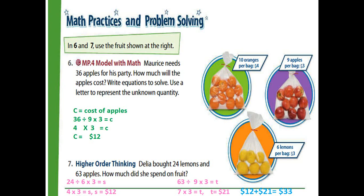Morris needs thirty-six apples; each bag has nine apples at three dollars per bag. So the equation is: thirty-six divided by nine, multiplied by three. Solving the division first: thirty-six divided by nine equals four, then multiply by three — so the total cost for thirty-six apples is twelve dollars.